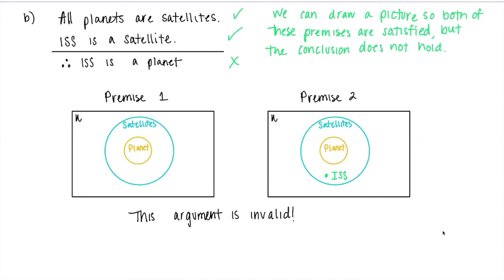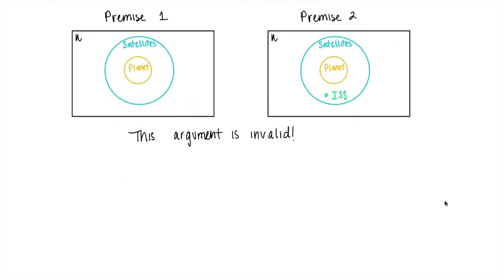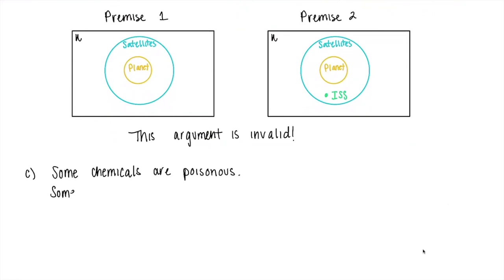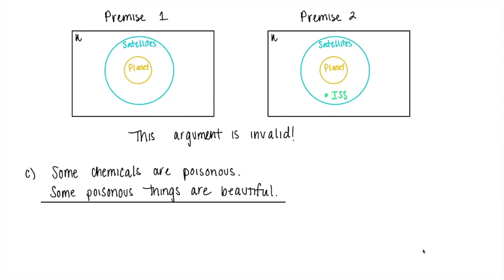Again, you're trying to see: can we contradict the conclusion but still satisfy those first two premises? Let's do one more — another example of something invalid that deals with the word 'some.' Some chemicals are poisonous; some poisonous things are beautiful; therefore, some chemicals are beautiful.